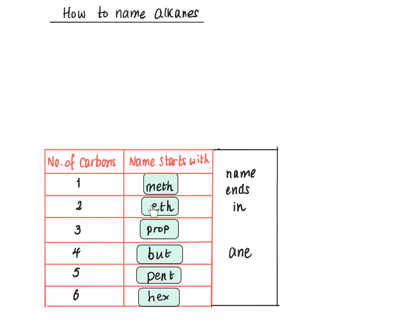If it contains two carbons it starts with eth, if the compound contains three carbons it begins with prop, four with bute, five with pent and six with hex, and they all end in A-N-E.